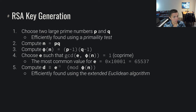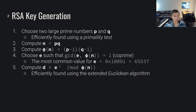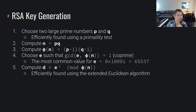For RSA key generation, we start by finding two large prime numbers, p and q. It's not a hard problem to find large prime numbers — they can be efficiently found using primality tests. Then we compute n as p times q, which is our modulus. Then we compute phi of n, where phi of n equals (p minus 1)(q minus 1).